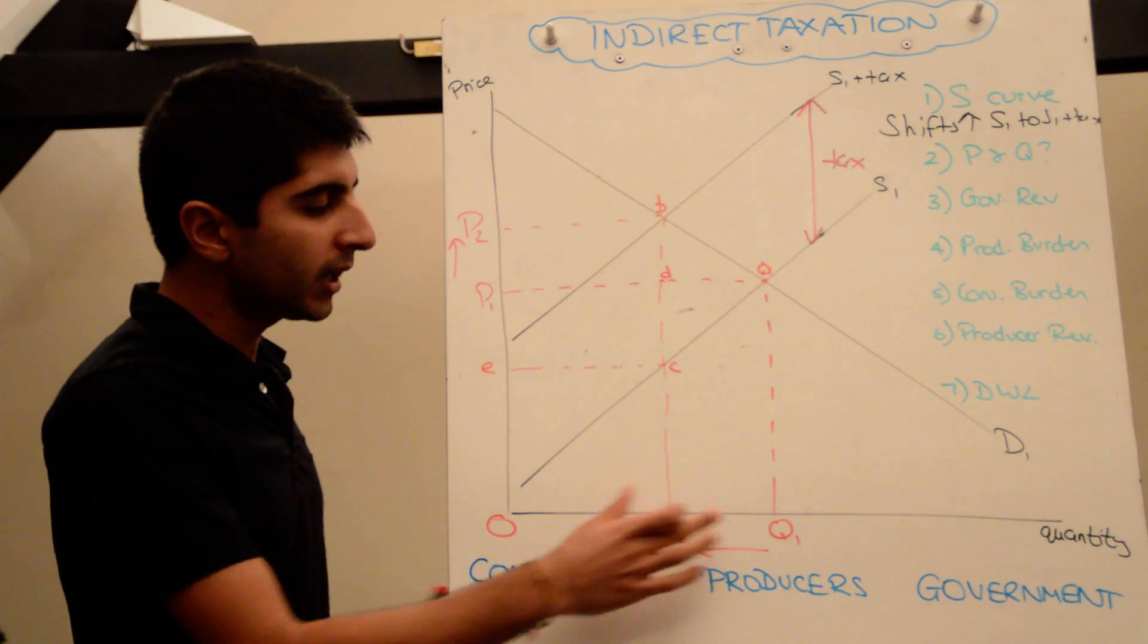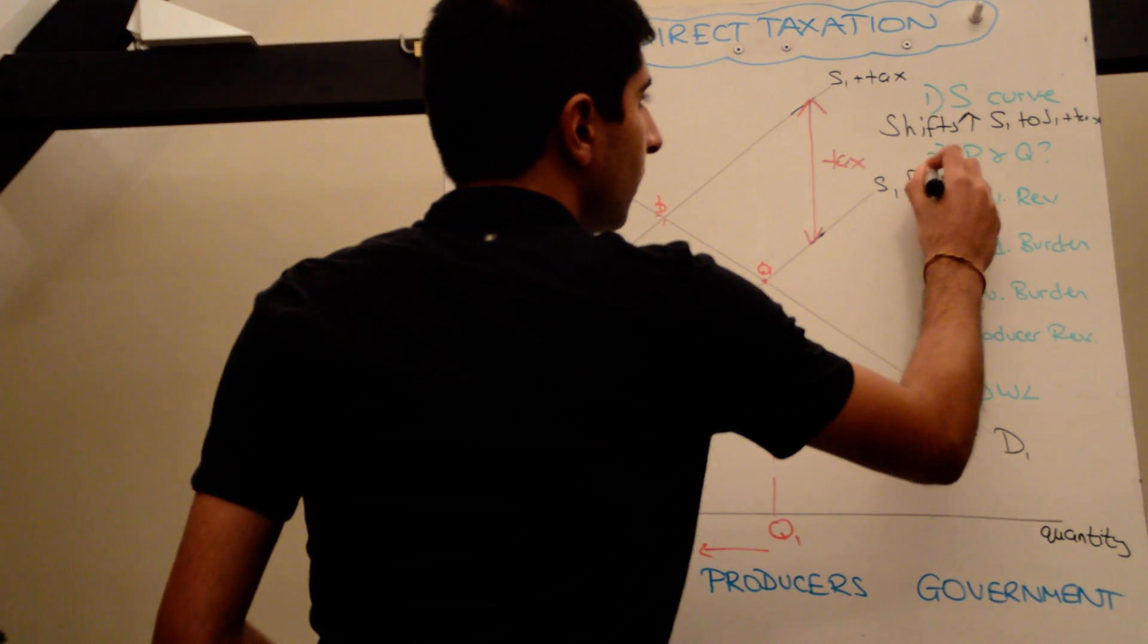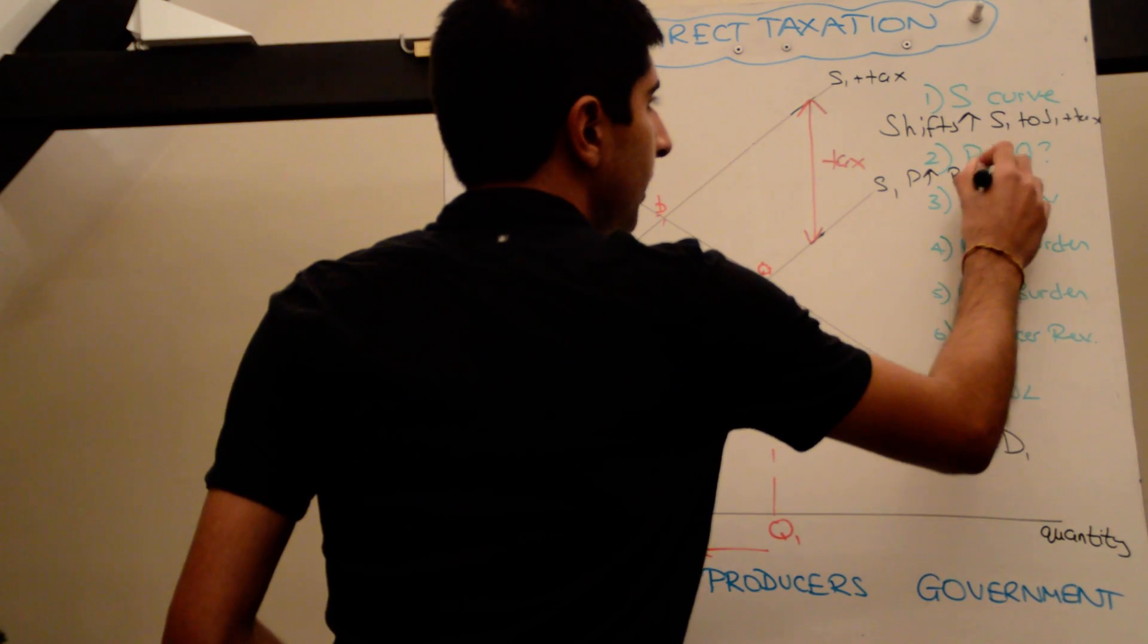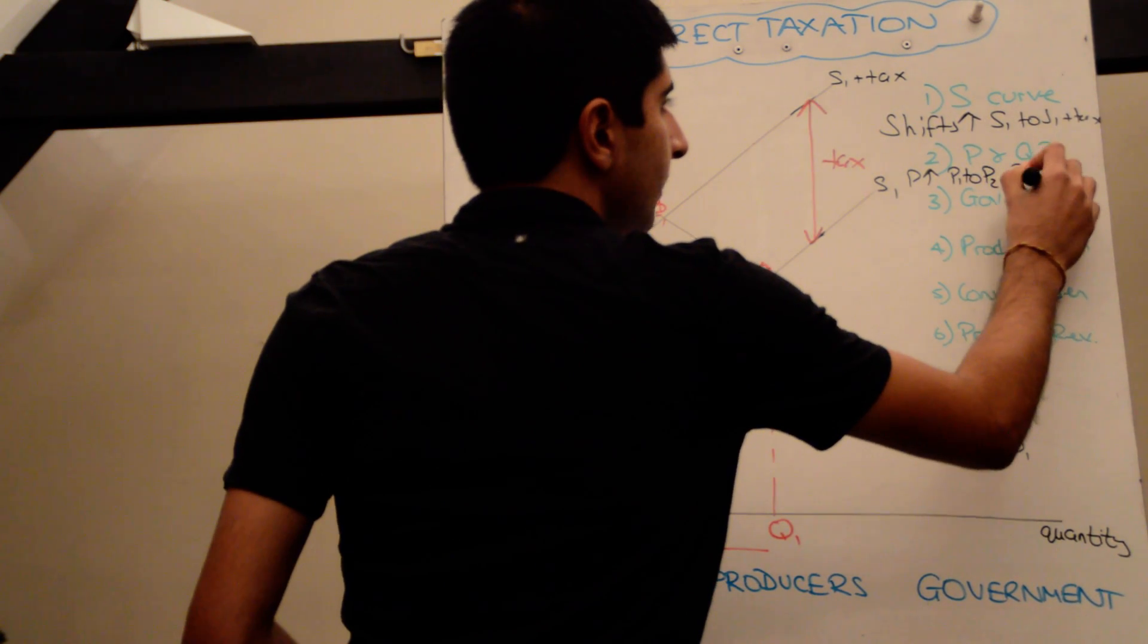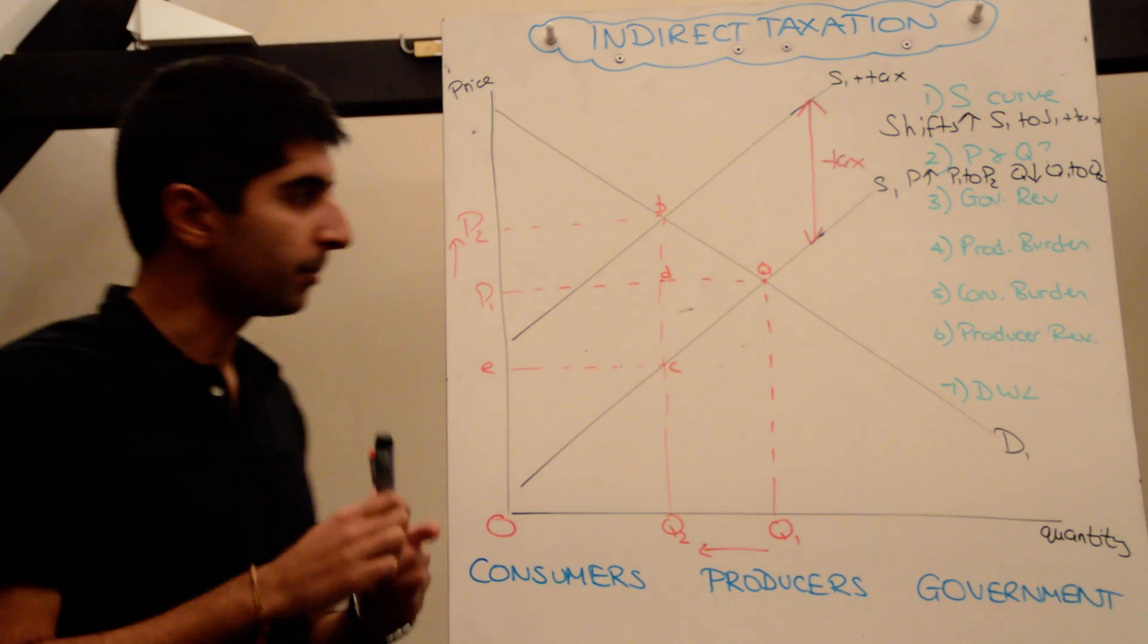Equilibrium is now changing in the market from P1, Q1 to P2, Q2. So price has increased from P1 to P2, quantity has decreased from Q1 to Q2. That's relatively simple.